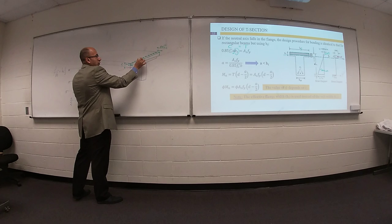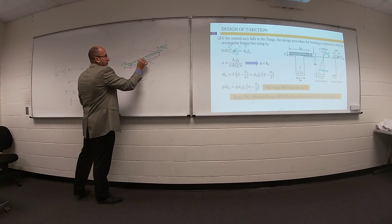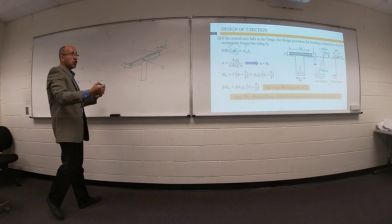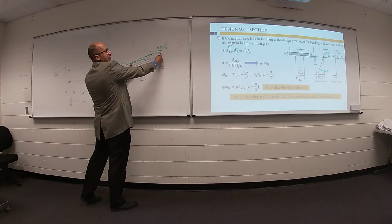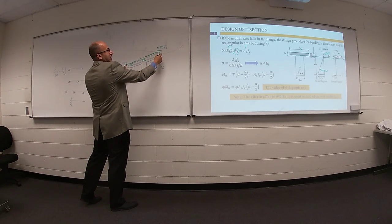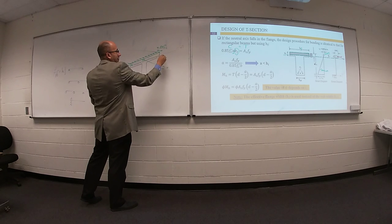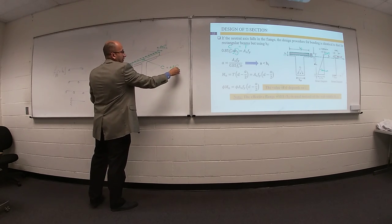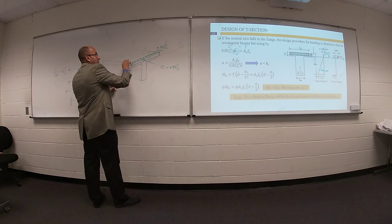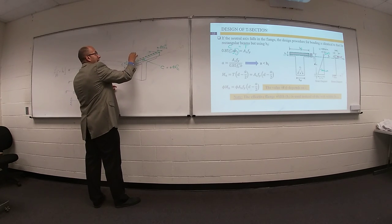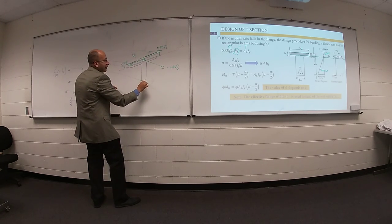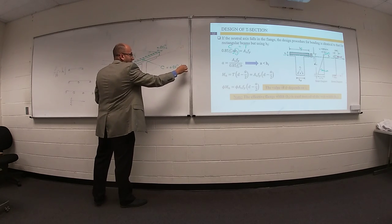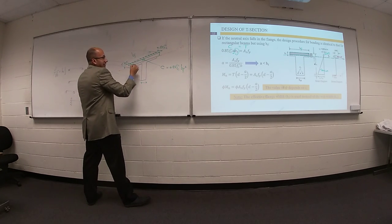If you would like to get your equivalent compressive force, remember this value equals the volume of this shape. The volume here is 0.85 F prime C, times this width which is called B flange — not this width — times this little distance A.